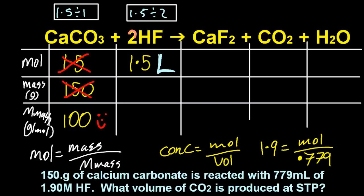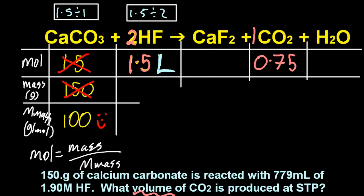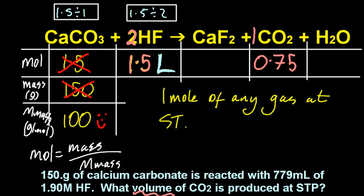So, 2 is to 1.5 as 1 is to 0.75. That's the ratio line, the top line. Oh. So, what volume of carbon dioxide is produced at STP? Well, maybe you know by now that one mole of any gas at STP is 22.4 liters. And I've got 0.75 moles, which gives me 16.8 liters. And we are done.